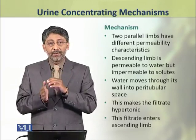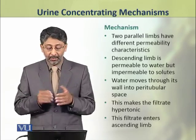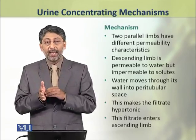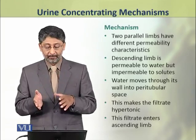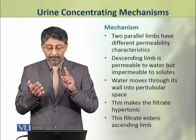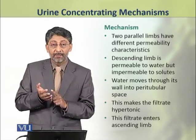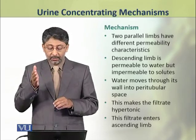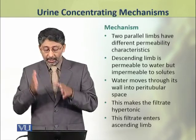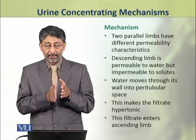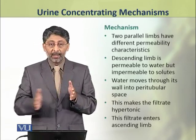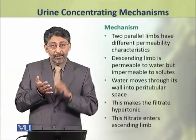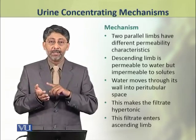Now we shall discuss the mechanism of counter-current multiplication. The two parallel limbs of the loop of Henle have different permeability characteristics. The descending limb is permeable to water but impermeable to solutes, so water moves through its wall out into the peritubular space. As a result, the filtrate in it becomes hypertonic.